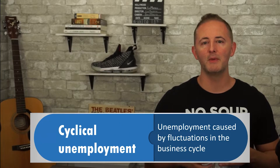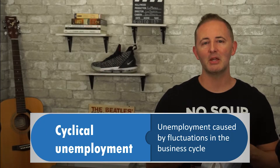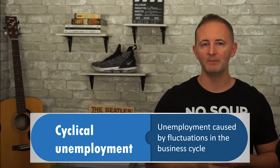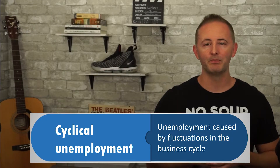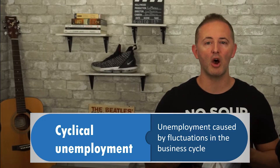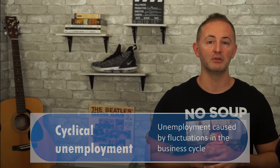Cyclical unemployment is unemployment caused by fluctuations in the business cycle. When the economy is in a recession, unemployment goes up — less stuff is being made, so businesses don't need as many workers. This kind of unemployment has one clear cause: the economy is in a recession. Of those three types, cyclical is the only one that's clearly bad for the economy. In fact, frictional and structural unemployment can even be a sign of progress and a strong economy. People are more likely to quit a job they hate when the economy is doing well, so frictional unemployment can actually be a good thing.